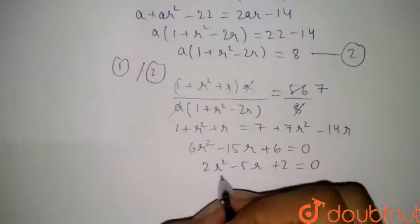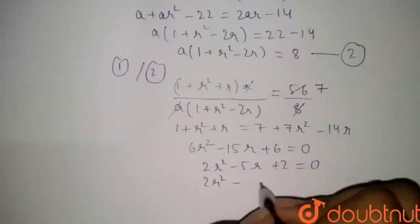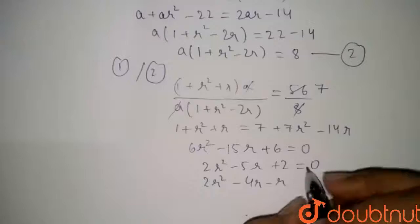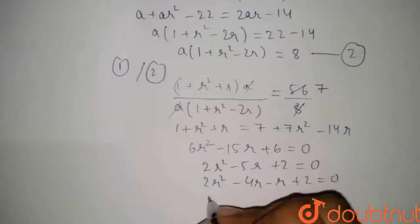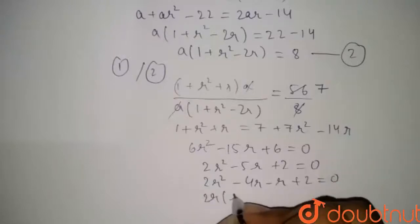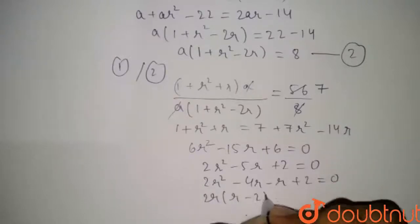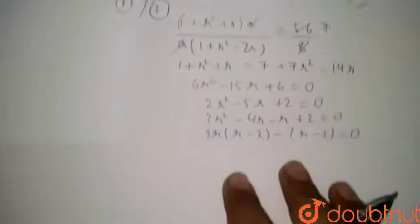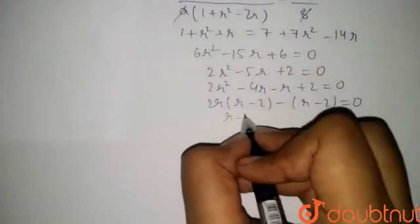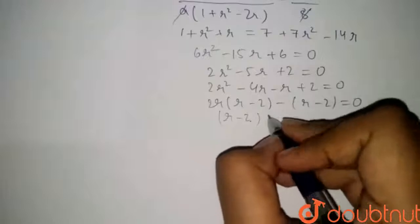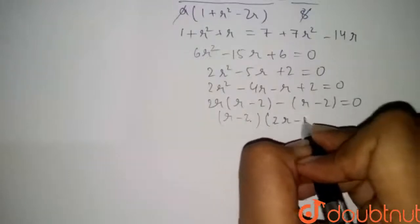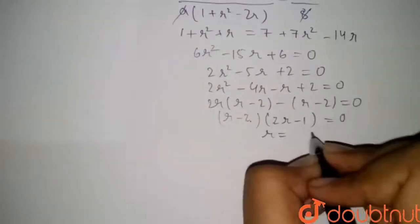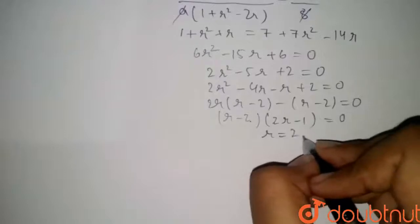Splitting the middle term: 2r² − 4r − r + 2 = 0, so 2r(r − 2) − 1(r − 2) = 0, giving (r − 2)(2r − 1) = 0. Therefore r = 2 or r = 1/2.